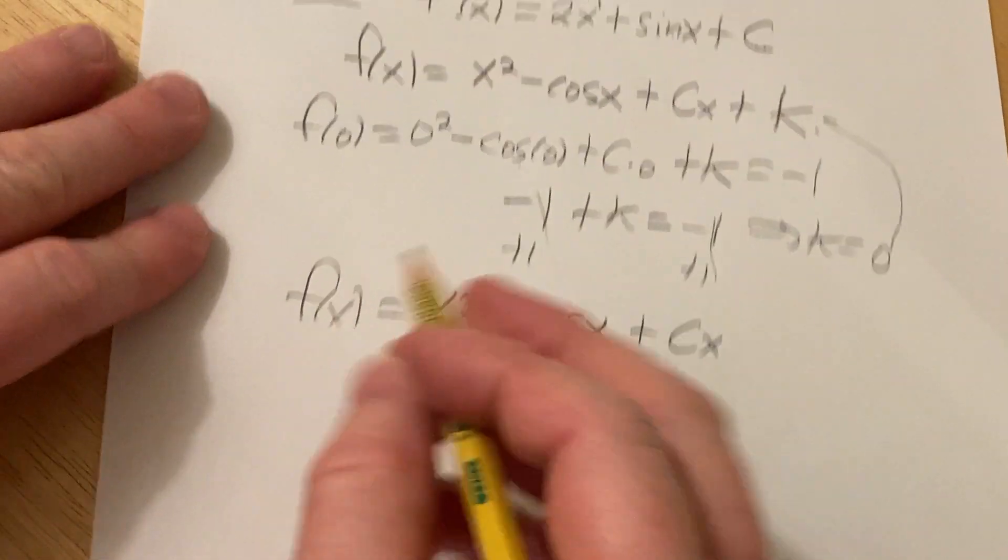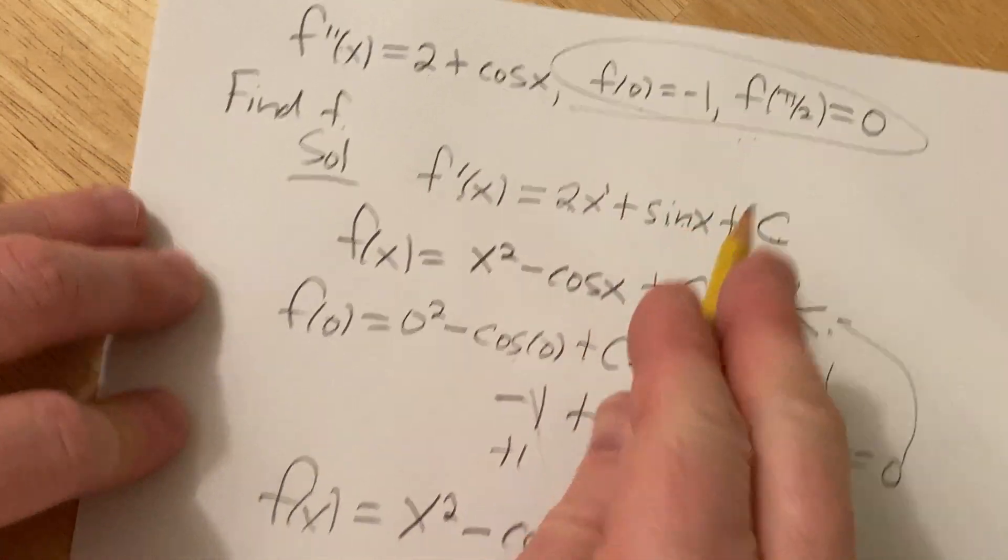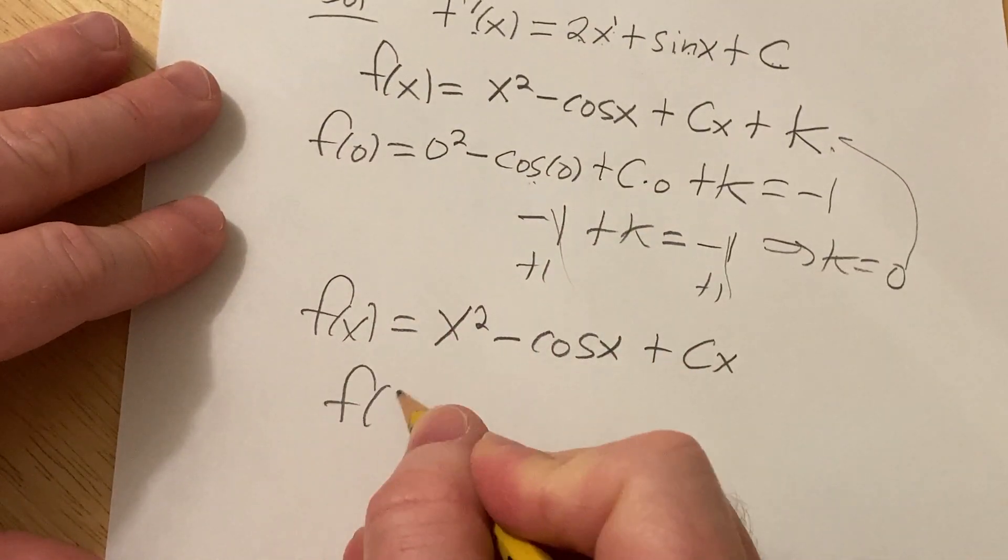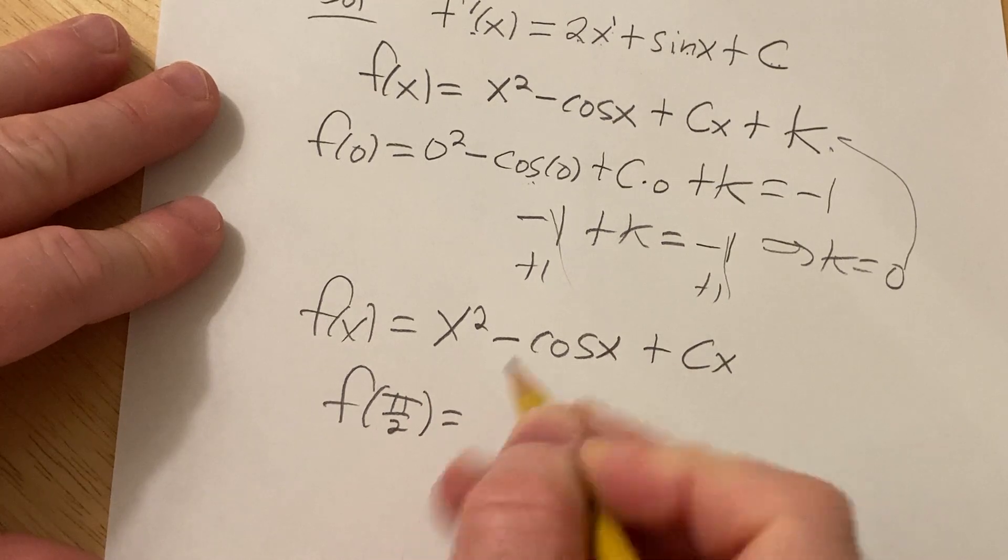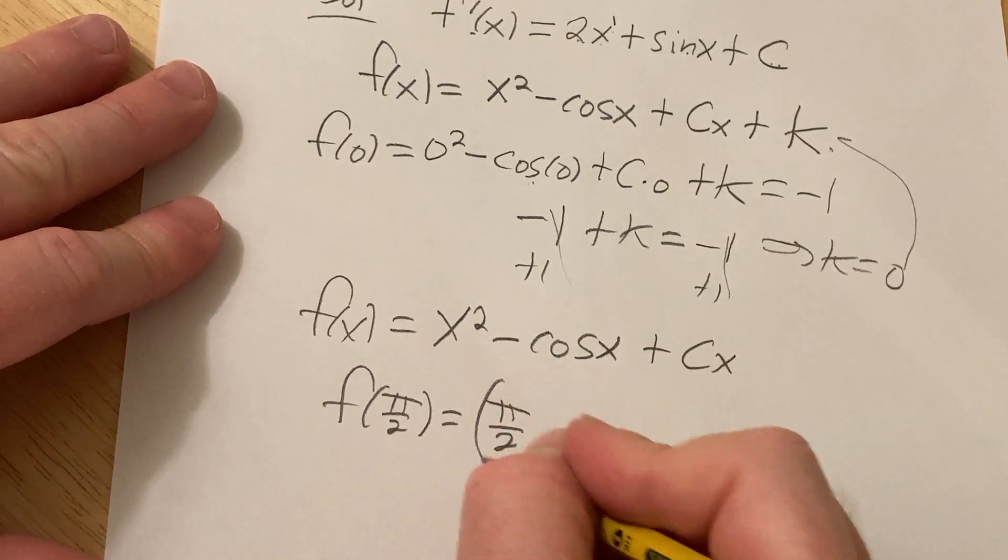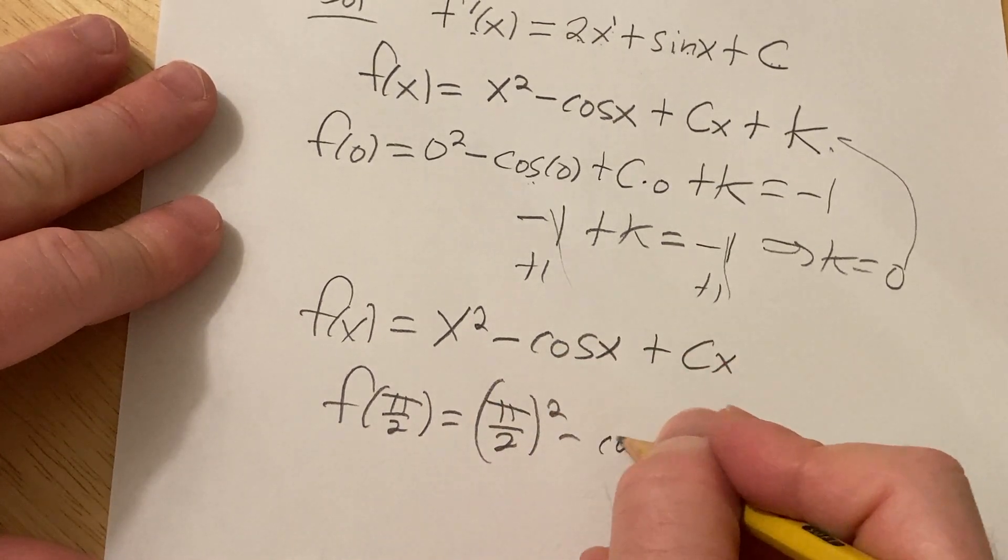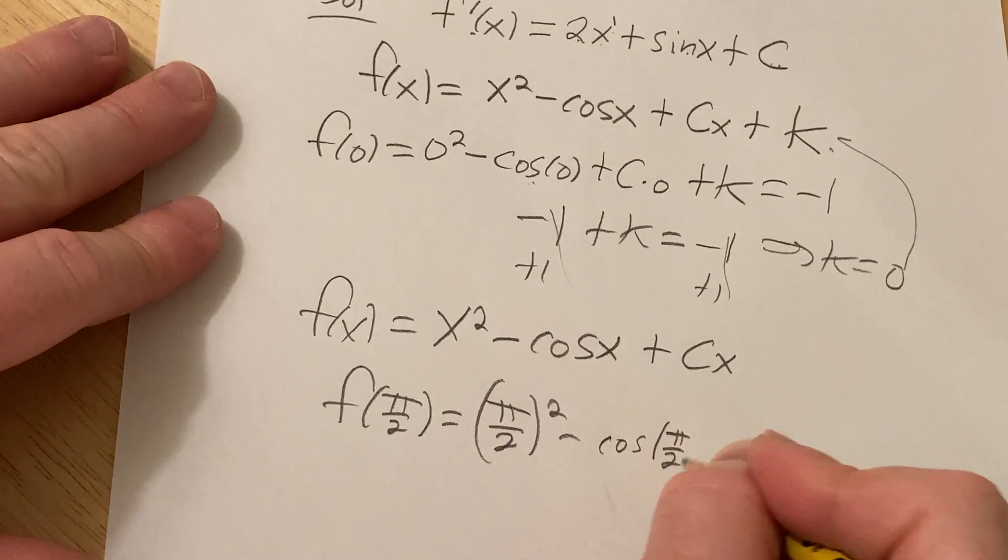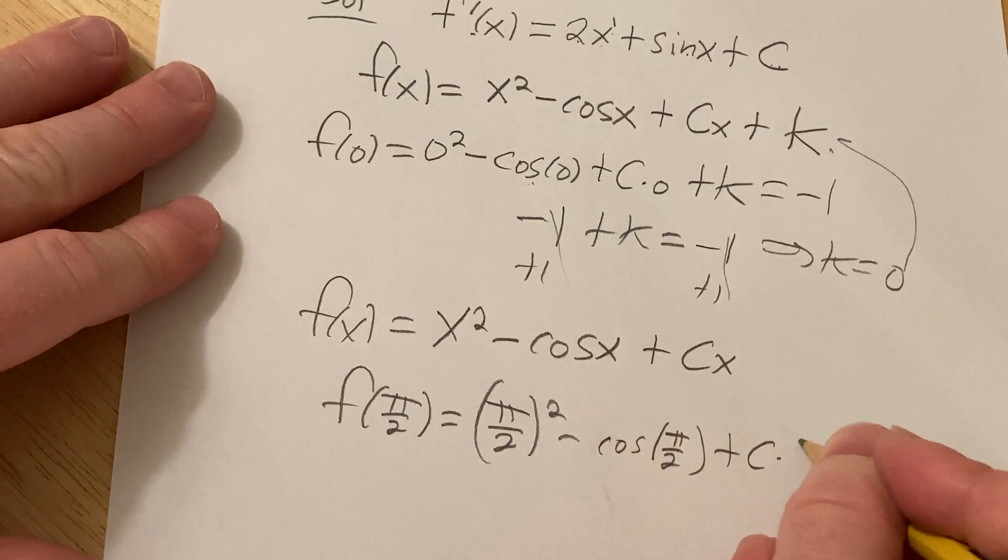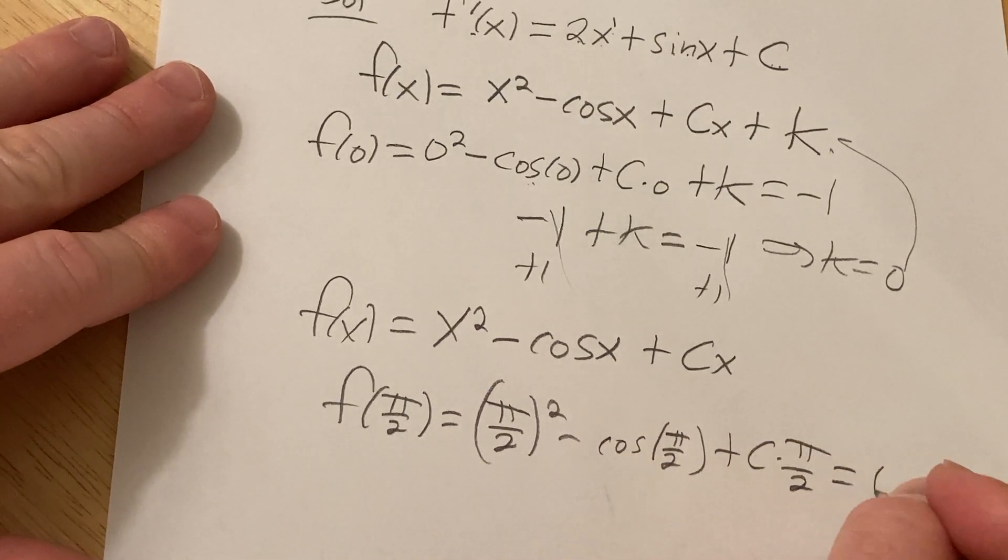So, we're told that f of pi over 2 is 0. So, I'm just going to plug in pi over 2 for all the x's. Everywhere there's an x, you just put a pi over 2. And then you set the whole thing equal to 0.